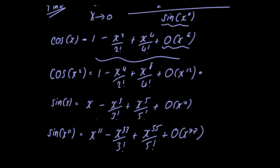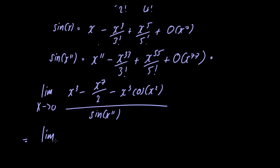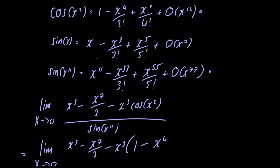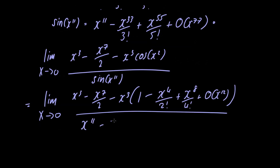Now let's take these two expressions and substitute them into our limit for cosine of x squared and sine of x to the 11th power. This gives us the limit as x goes to 0 of x cubed minus x to the 7th power, divided by 2 minus x cubed, multiplied by 1 minus x to the 4th power divided by 2 factorial, plus x to the 8th power divided by 4 factorial, plus O of x to the 12th power, all divided by x to the 11th power minus x to the 33rd divided by 3 factorial, plus x to the 55th divided by 5 factorial, plus O of x to the 77th power.